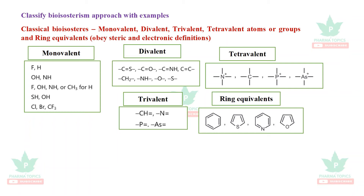Classical bioisosterism examples: for monovalent, hydrogen can be replaced by fluorine. OH and NH can be substituted, affecting kinetic or dynamic properties and biological activity. Chlorine, bromine, thiol, and OH are also monovalent bioisosteres. For divalent: C=O can be replaced by C=S or C=O with O or S. Trivalent bioisosteres include phosphorus, nitrogen, and CH. Tetravalent bioisosteres include quaternary nitrogen, carbon, and phosphorus. Ring equivalents include benzene, thiophene, furan, and purine.